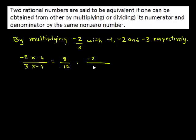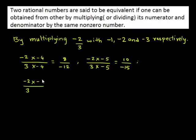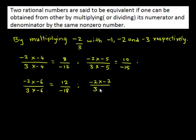The 6th term can be obtained by multiplying with negative 5, which gives 10 upon negative 15. The 7th term can be obtained by multiplying negative 2 upon 3 with negative 6, which gives 12 upon negative 18. And the 8th term can be obtained by multiplying negative 2 upon 3 with negative 7, which gives 14 upon negative 21.